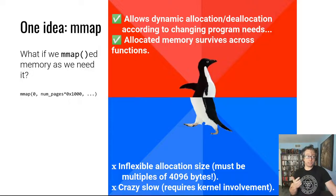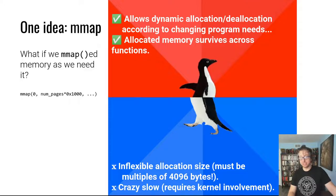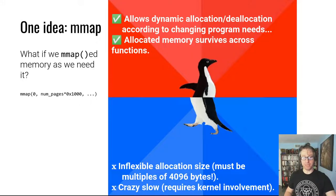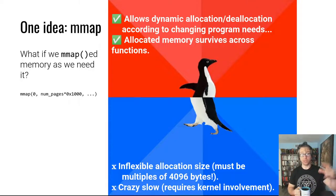However, mmap has a couple of problems. First, the allocation size is very inflexible — it must be a multiple of 4096 bytes, because that's how large a page is, and mmap only works on a page basis. The other problem is that this is a very slow solution: memory mapping, unmapping, and changing memory maps all have to go through the kernel, requiring a context switch and syscall handling with significant overhead.